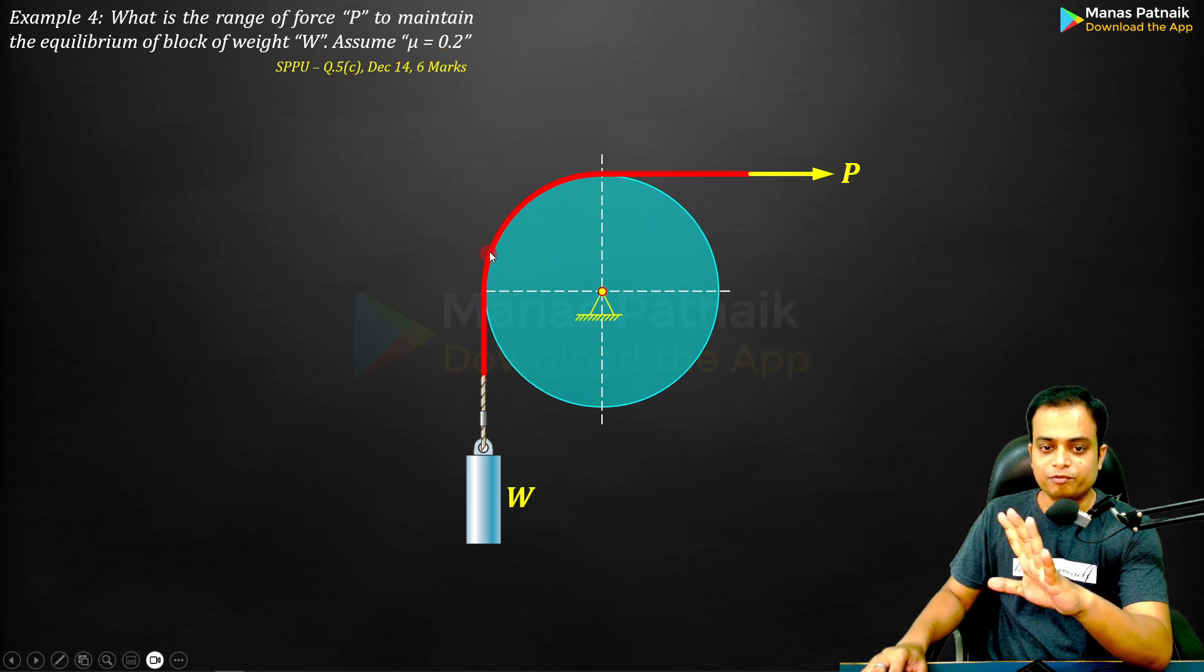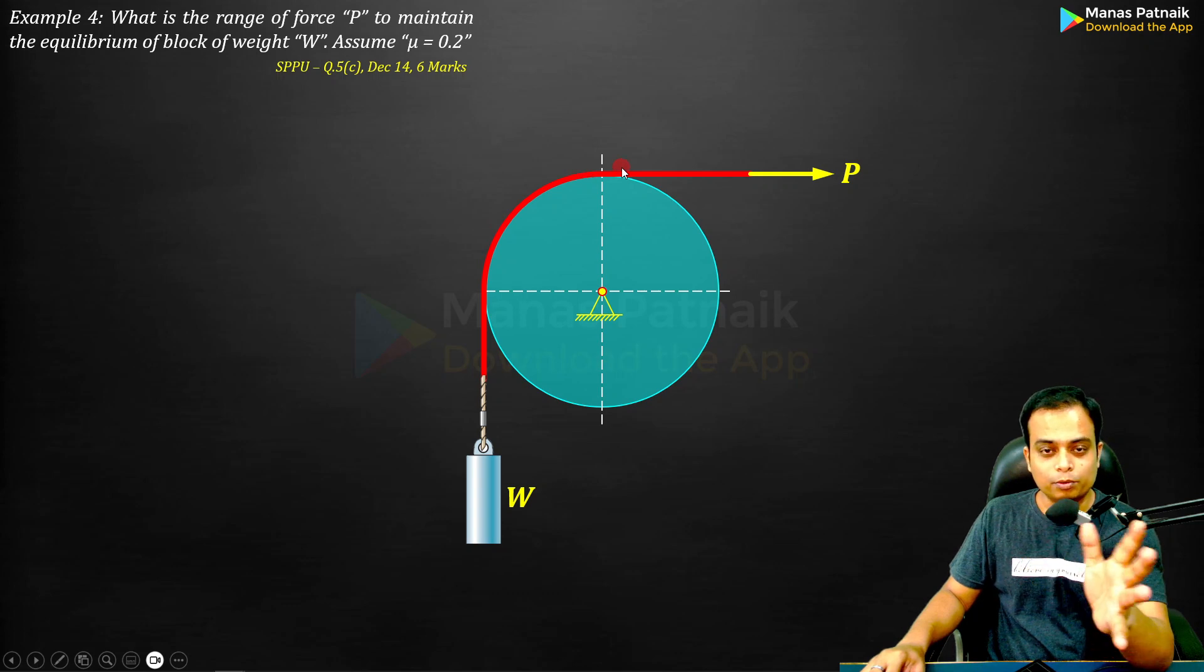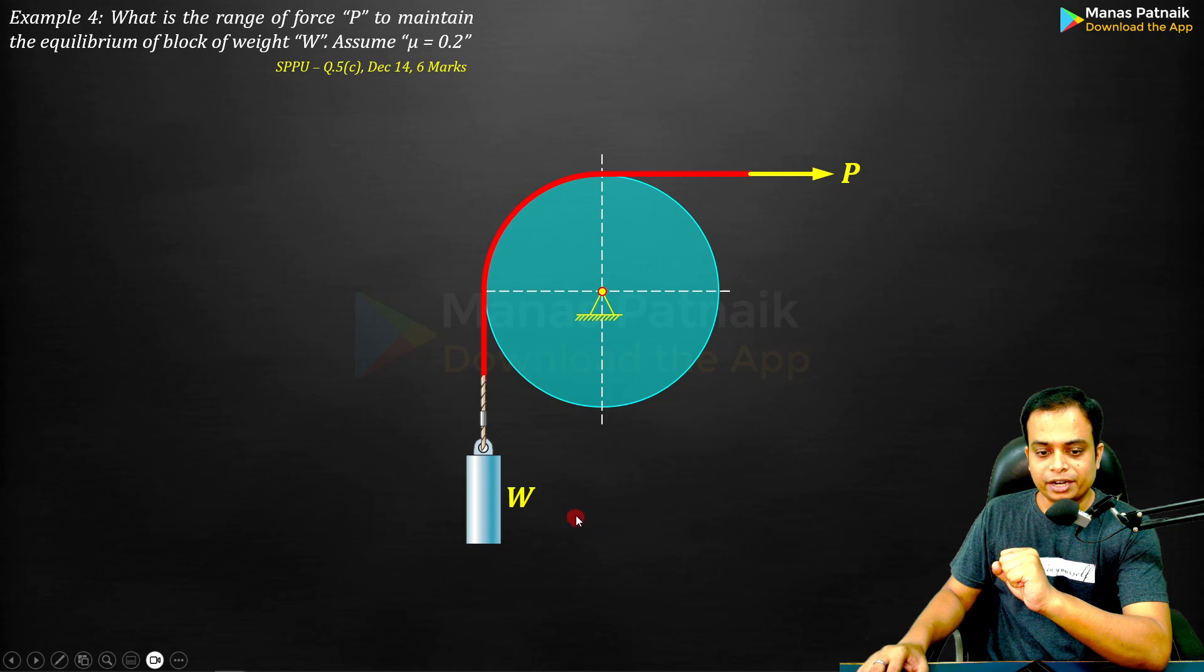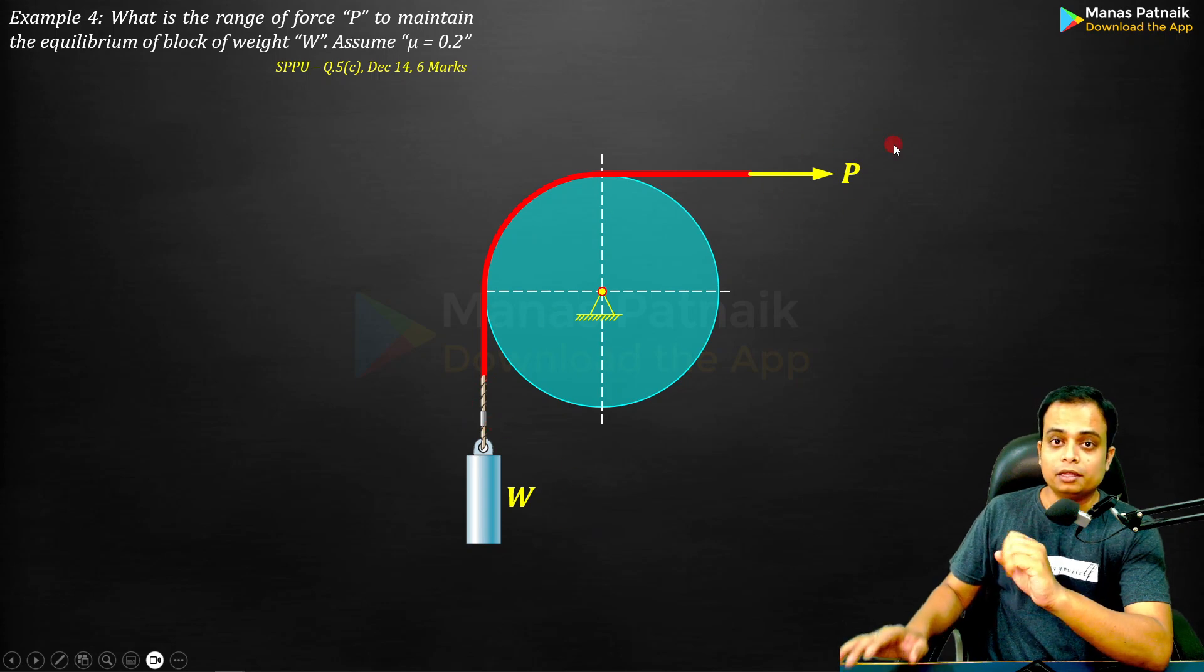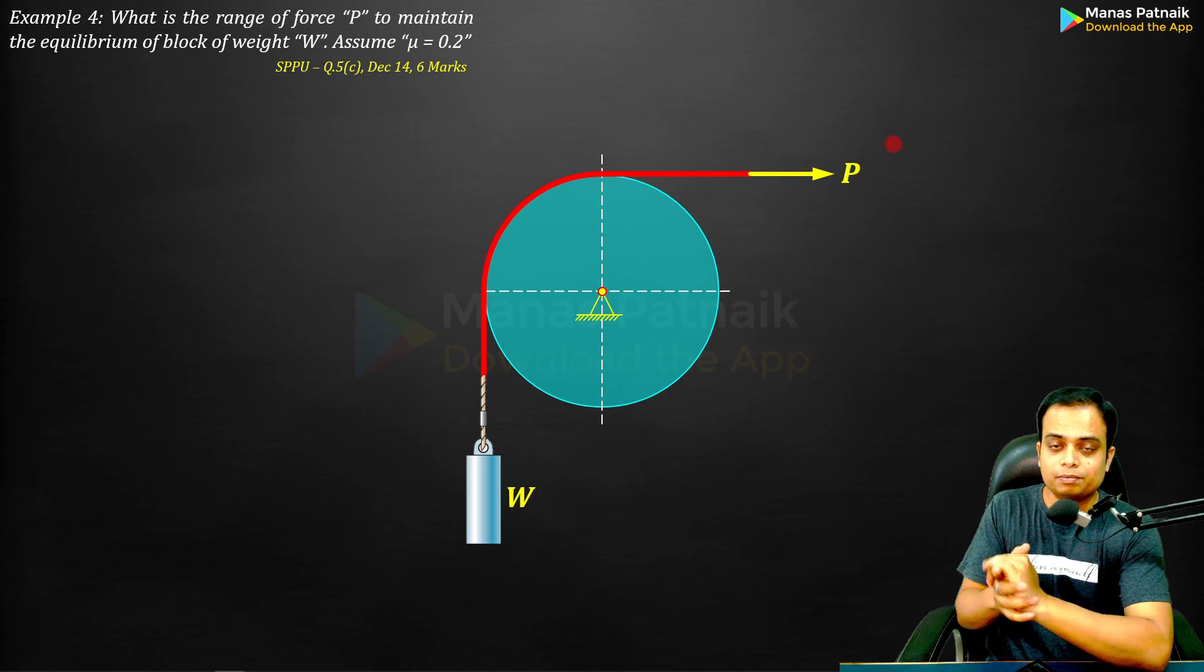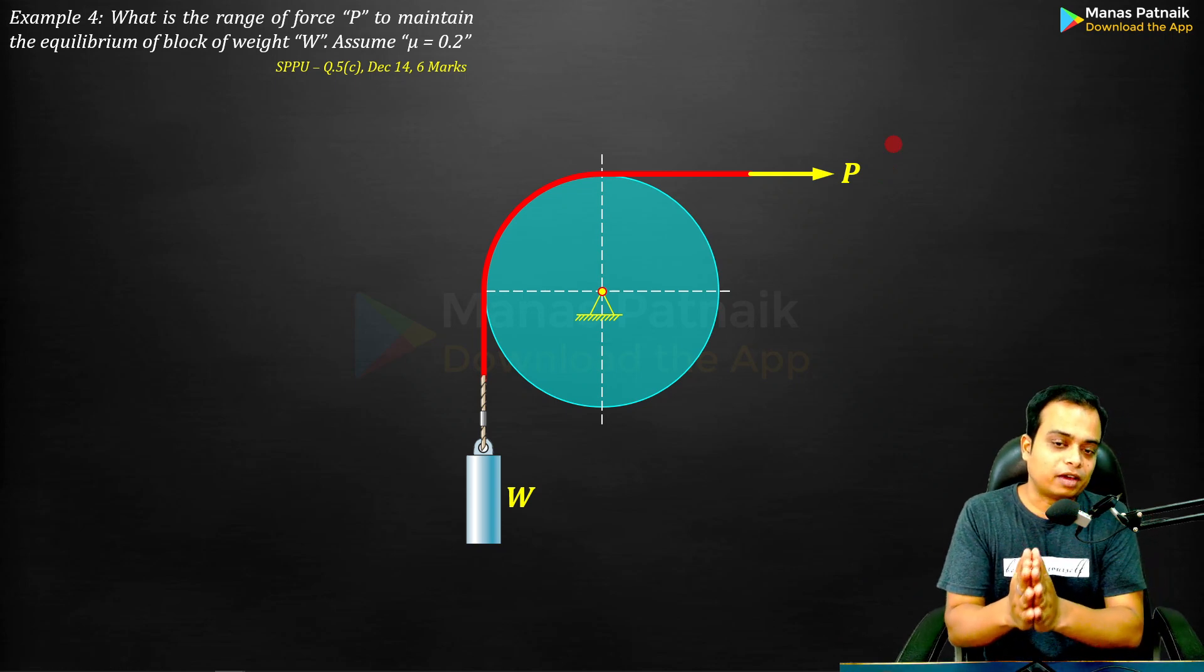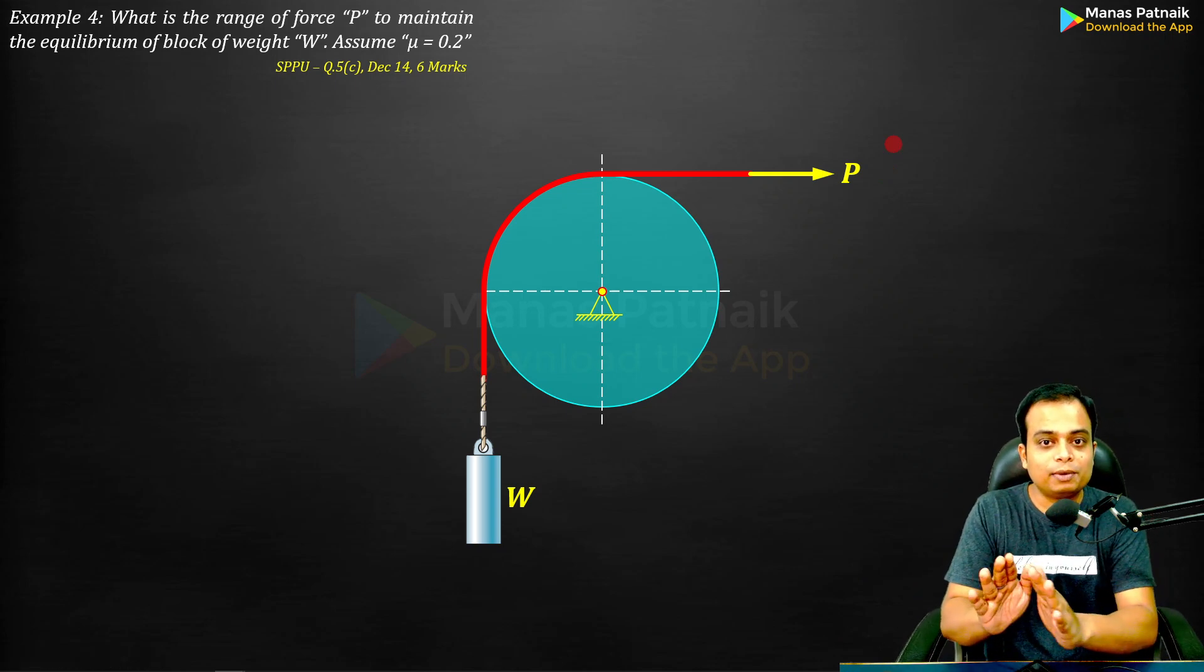One end of it has a weight suspended and on the other end you've got this force P. There is no unique answer here. You've got to find a range of values. What you need to do is split up this question into two parts.